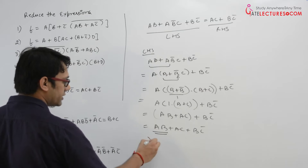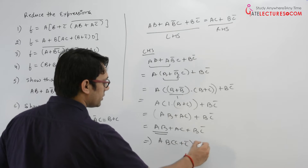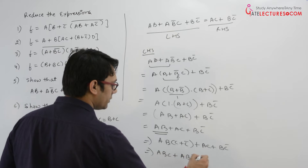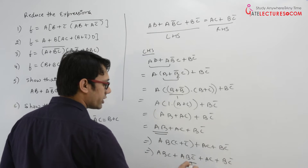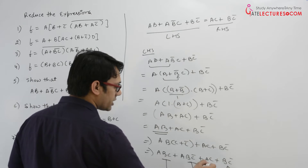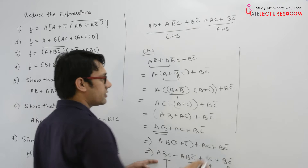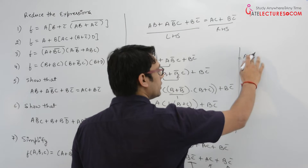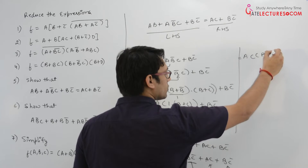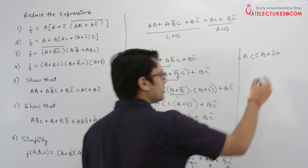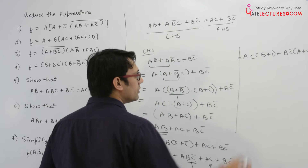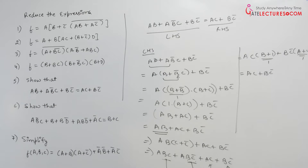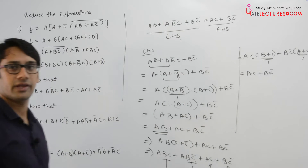Now for this expression ab + ac + bc', you can write ab(c + c') + ac + bc', giving abc + abc' + ac + bc'. Taking ac as common between abc and ac: ac(b + 1) = ac. Taking bc' as common between abc' and bc': bc'(a + 1) = bc'. Since (b+1) = 1 and (a+1) = 1, the expression becomes ac + bc'. Hence left hand side equals right hand side, so we have proved that both expressions are equivalent.